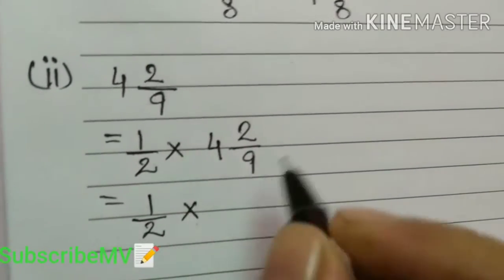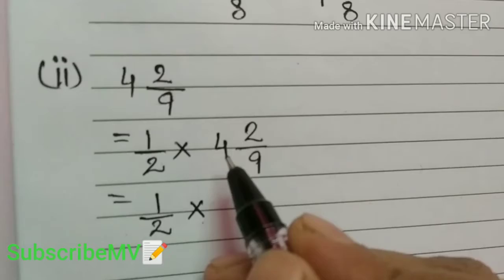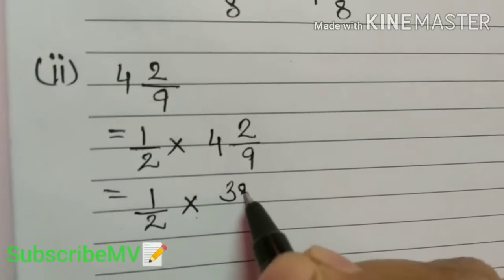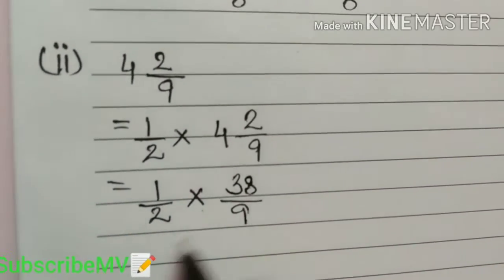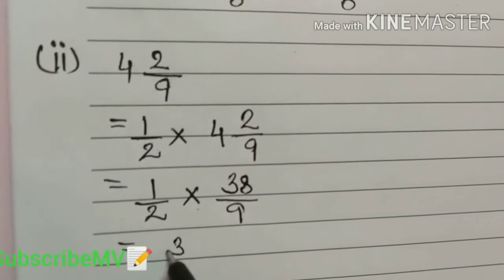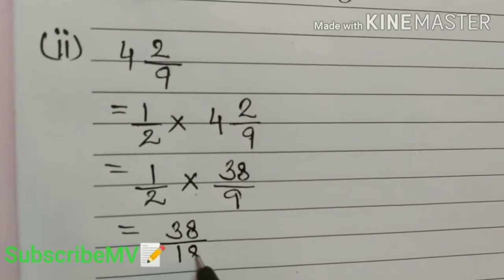So half into 9 times 4 are 36 plus 2, 38 by 9. That is equal to 38 by 2 into 9, 18.